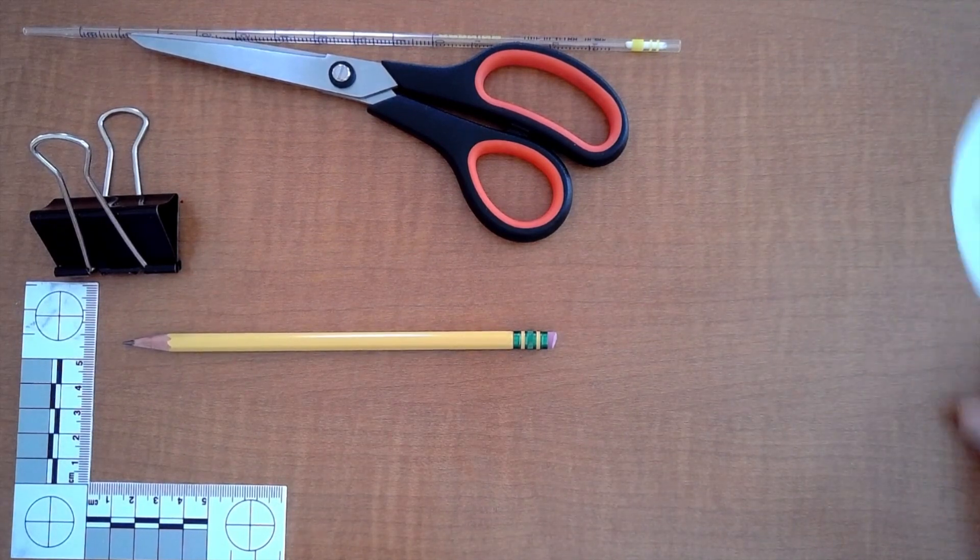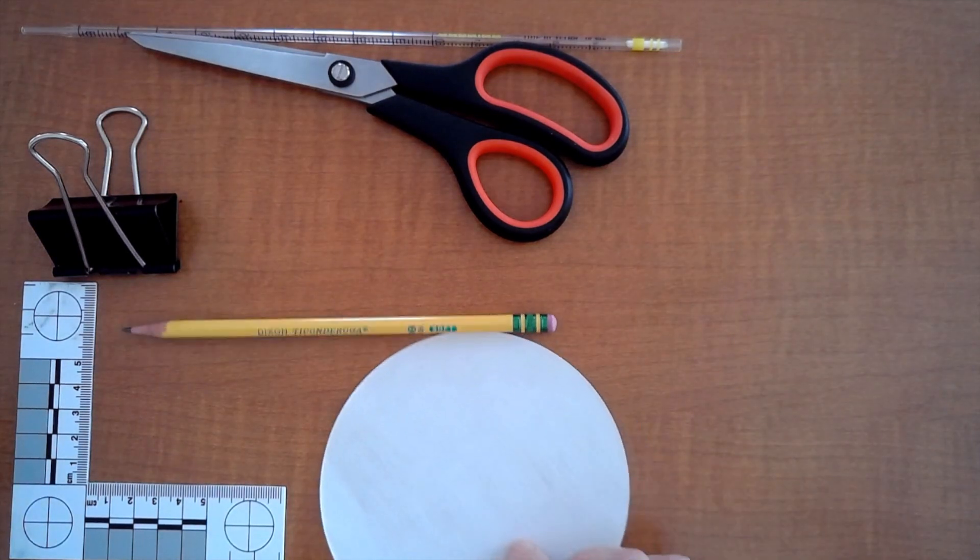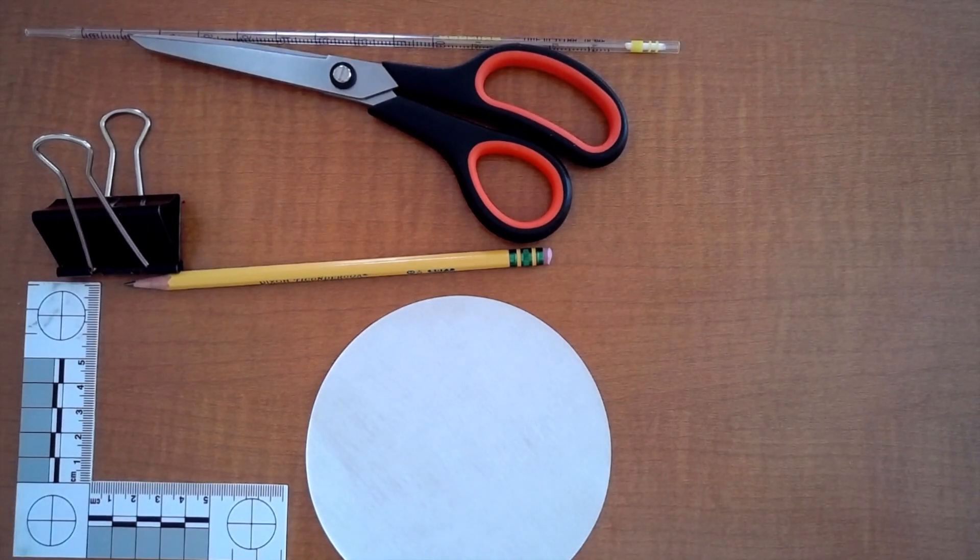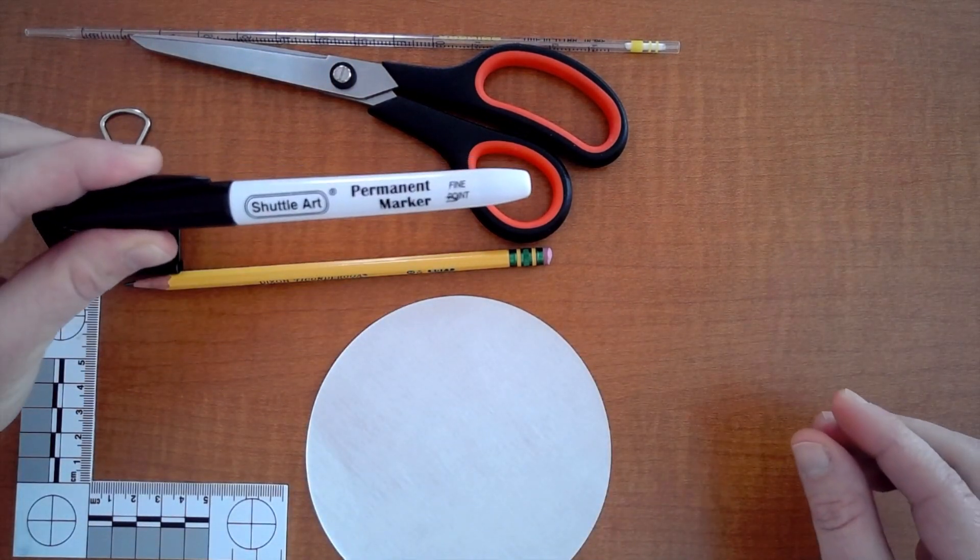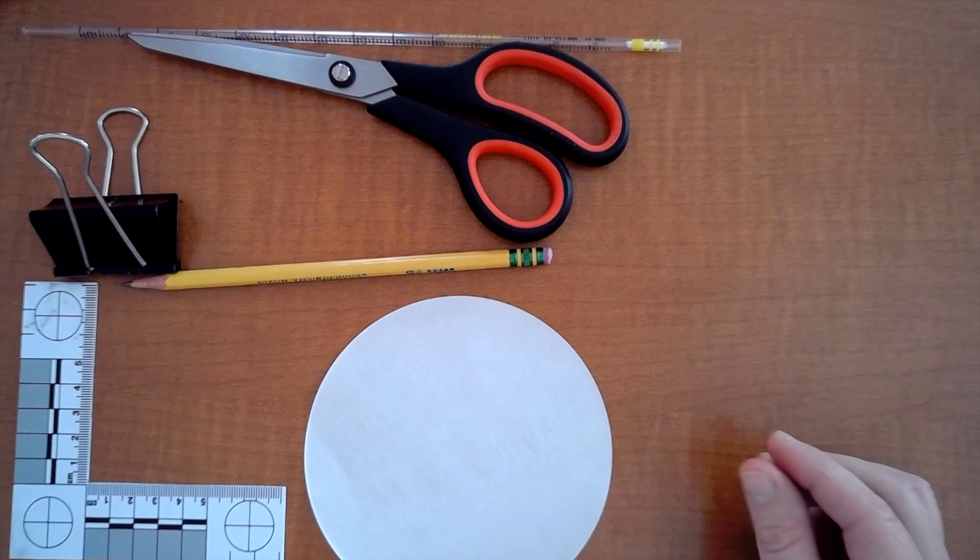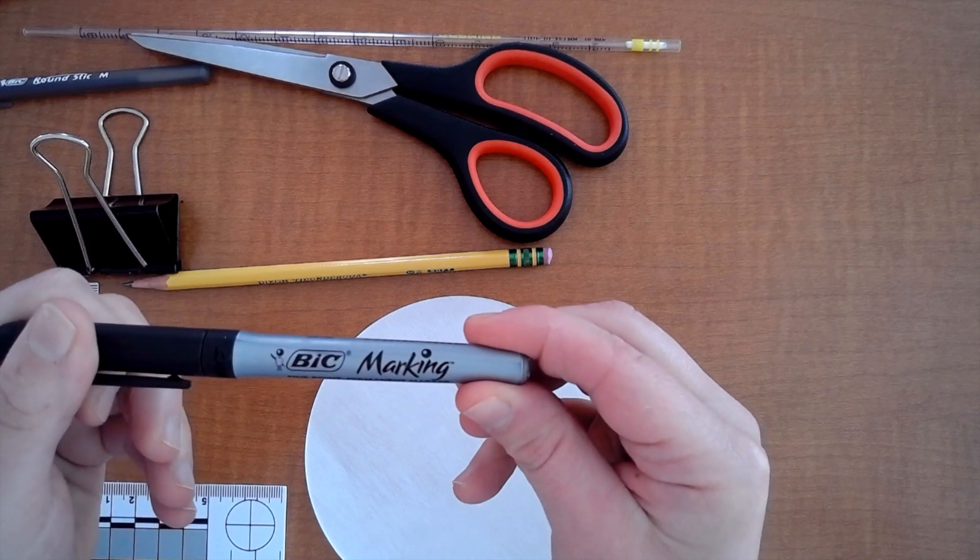You will need filter paper, looks like a big circle, and you will need a bunch of different markers. So let's take a look at pens. We're going to have the Shuttle Art permanent marker, the Bic round stick pen, the Bic marking marker.